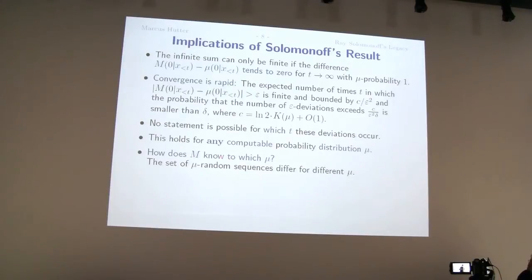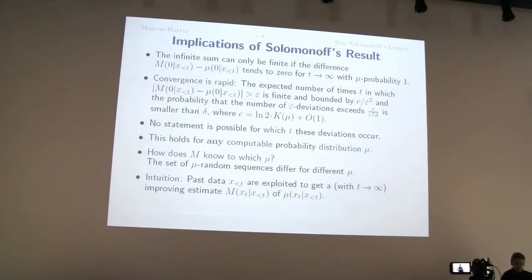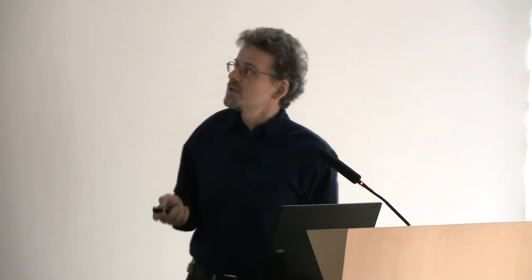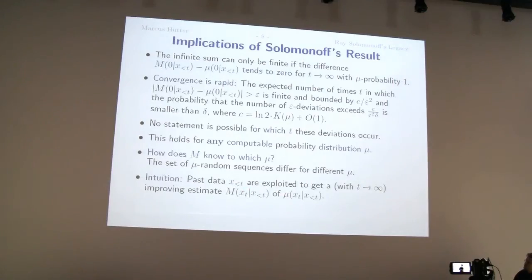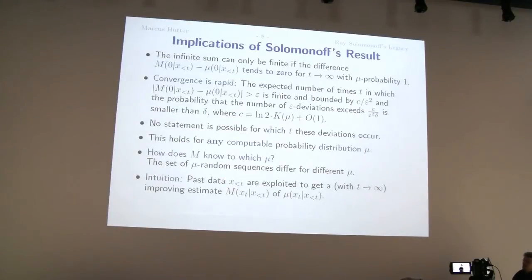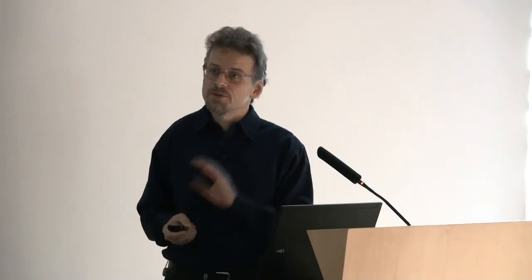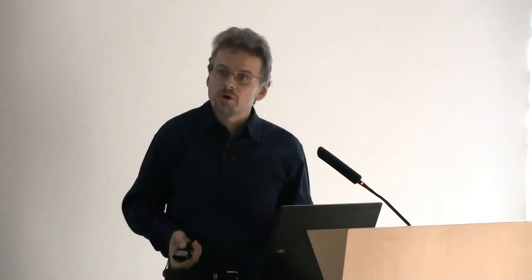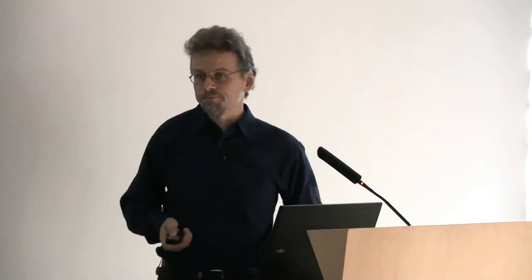So one question is, how does it work? I mean, how could it work that m converges to any mu, whatever you choose from mu? And the reason is, I mean, if you know statistics enough and Bayesian statistics, you sample this data x from your mu. So that means your data x have some or inherit some properties of this mu. And m sort of is smart enough to figure out these properties. Or more technically, you can represent m, that's the third representation which I didn't present, as a Bayesian mixture over all computable probability distribution, which is equivalent to the definition I gave you, or more formally or semi-distributions. And then we all know if we have a class of distributions, we take a Bayesian mixture over it, and usually using this Bayesian mixture for prediction converges rather rapidly to the true distribution.